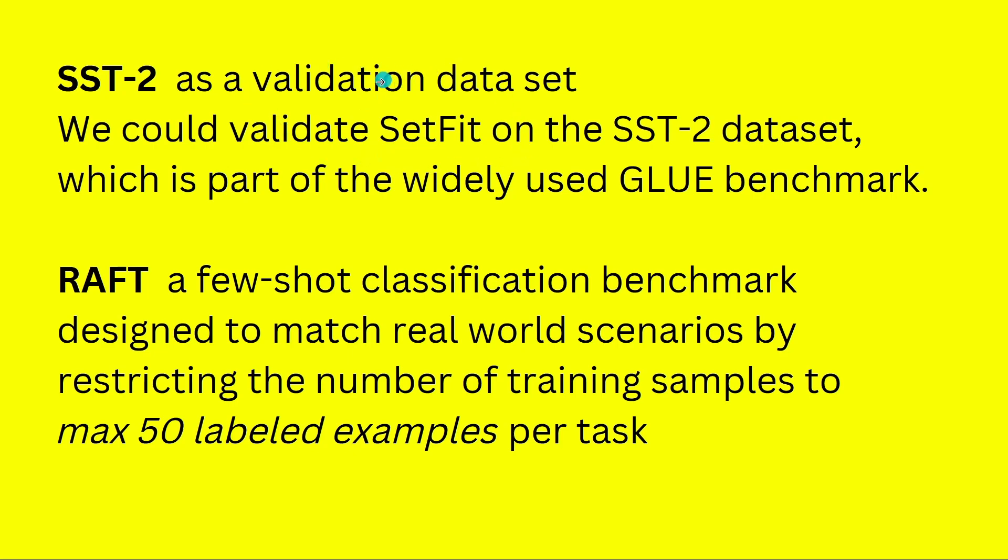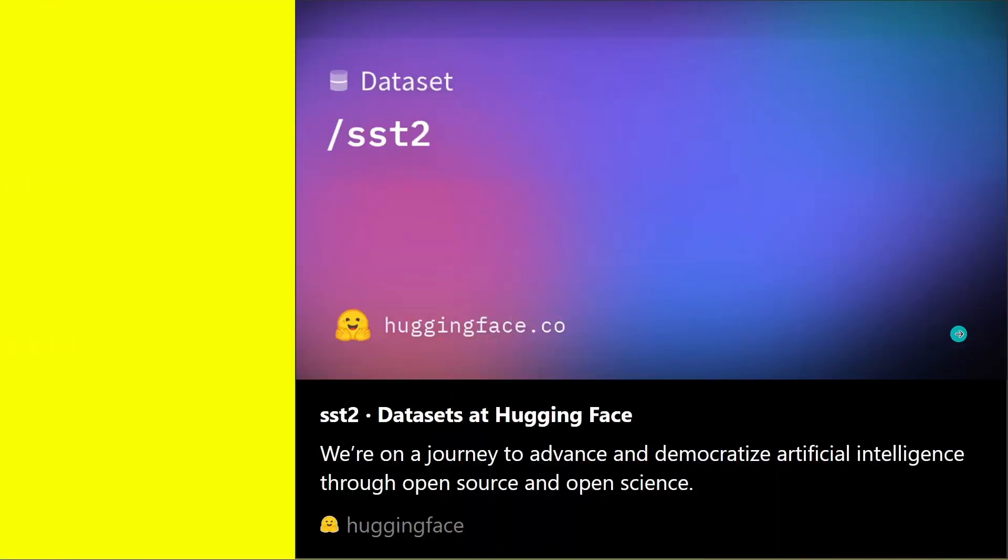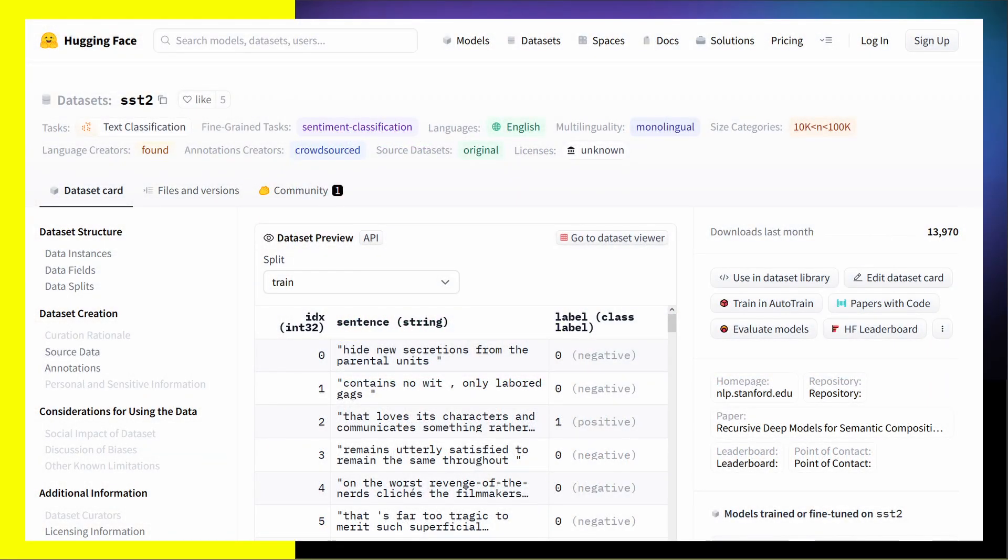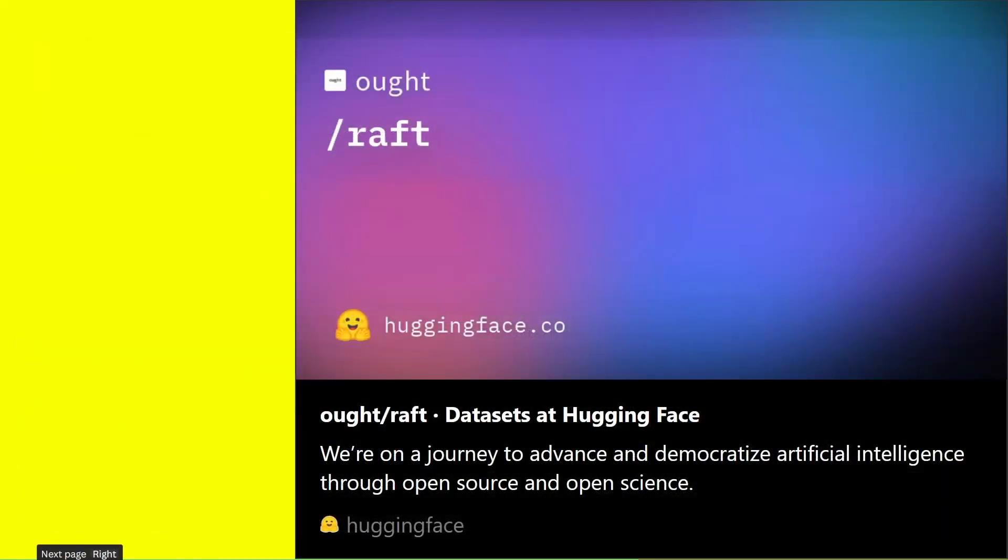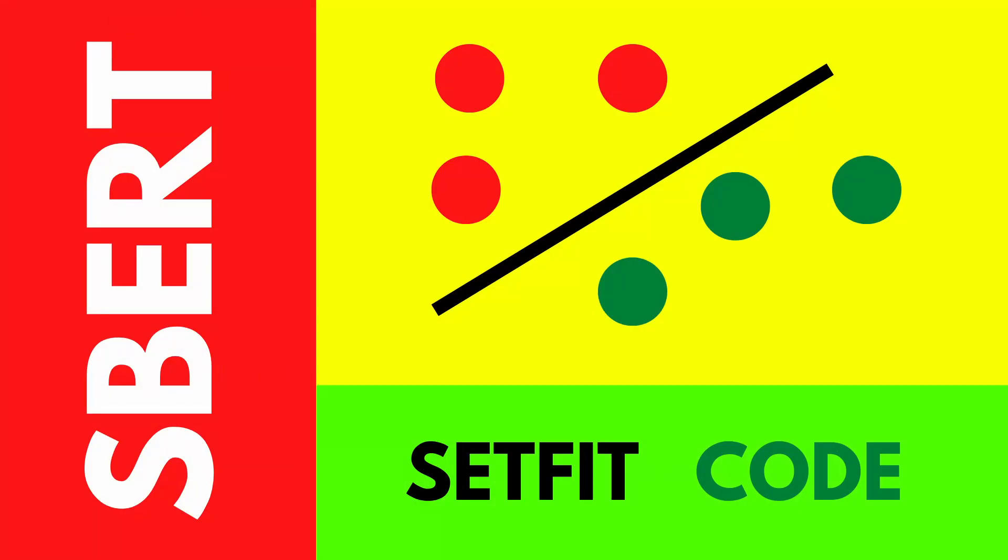And we can validate then our model that we're going to build with the SST2, the validation data set, the Stanford tree data set. And this is of course part of the Glue benchmark data set you are familiar with. So this is where you can find it. On Hugging Face, you have the data set SST2. If you search for it, you can download it over there. And the other side is the data set RAFT from Hugging Face. And you can also download it directly from Hugging Face. And in the next video, we will do exactly this with our code. So here we go.